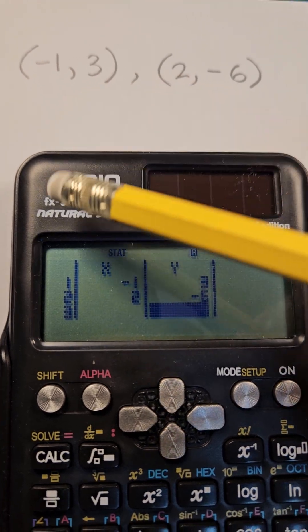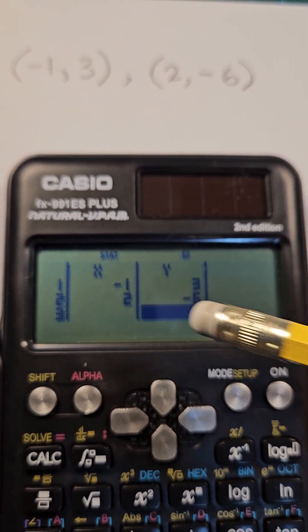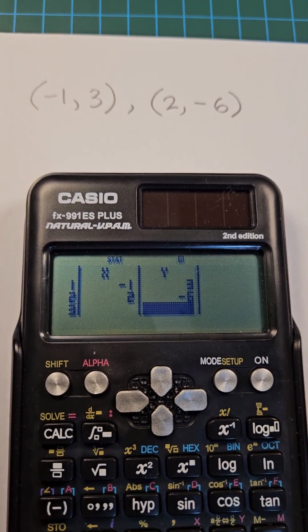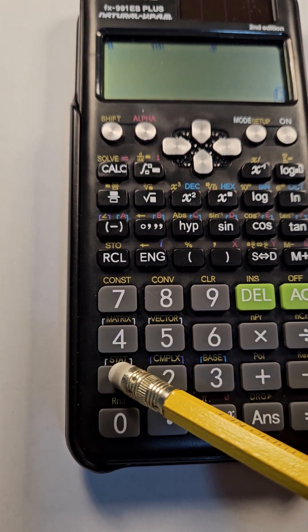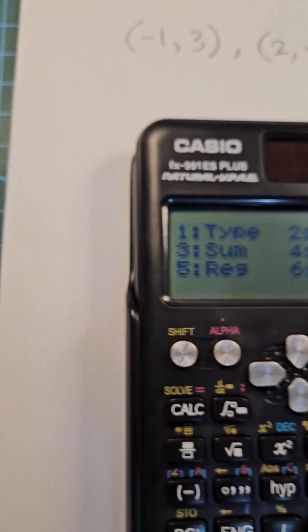I've now got the two coordinates entered in the x and y columns respectively. Press the AC key, then shift, then 1 stat, then option 5 reg.